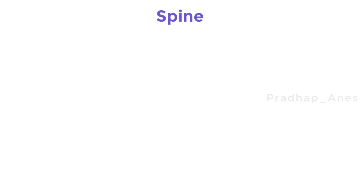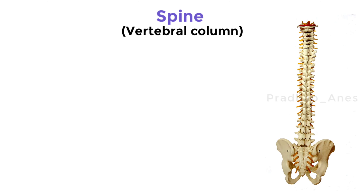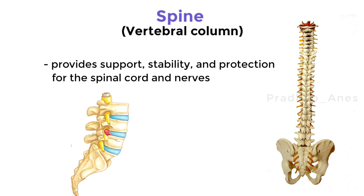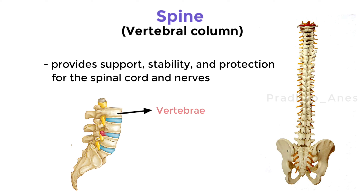The spine, also known as the vertebral column, is a remarkable structure that provides support, stability, and protection for our spinal cord and nerves. It consists of individual bones called vertebrae, stacked upon one another like building blocks.